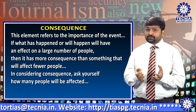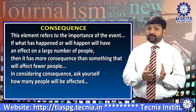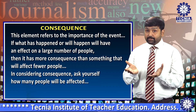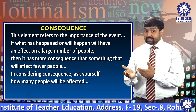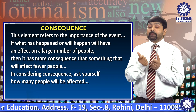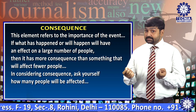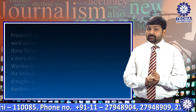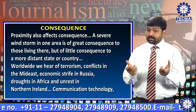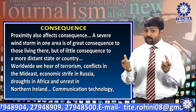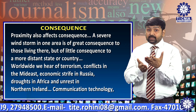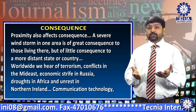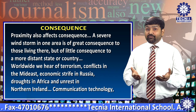The next element is consequence. This element refers to the importance of the event. If what has happened or will happen will have an effect on a large number of people, then it has more consequence than something that will affect fewer people. In considering consequence, ask yourself: how many people will be affected? Proximity also affects consequence — a severe windstorm in one area is of great consequence to those living there, but of little consequence to a more distant state or country.